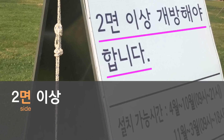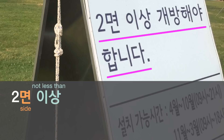이면 means 'two sides' because 면 means 'side' in this case. So 삼면 means three sides, 사면 means four sides, etc. And 이상 here in this context means 'not less than' or 'no less than.' So 이면 이상 would mean 'two sides or more.' It doesn't mean more than two sides, but actually more than one side — so two sides or more.